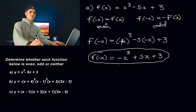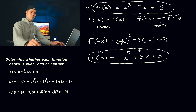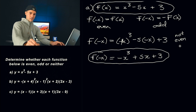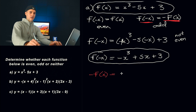So this is what f of negative x equals — the simplified function. First check: is f of negative x equal to the original function f of x? No, it's not. We have x cubed minus 5x plus 3, but here we have negative x cubed plus 5x plus 3. These are definitely not the same polynomials, so we know the function is not even. The next check is whether f of negative x equals negative f of x, so we have to find negative f of x.